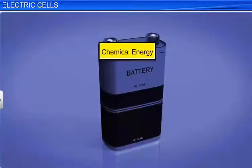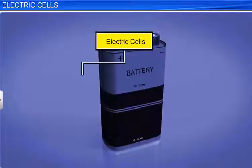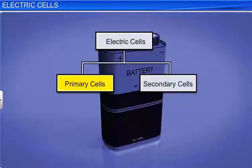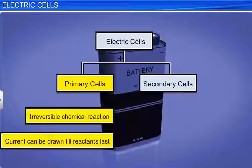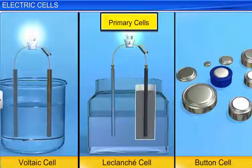There are two types of electric cells: primary cells and secondary cells. In primary cells, the chemical reaction is irreversible. Hence, current can be drawn from this type of cell until the reactants last. Once the reactants have been consumed, current cannot be drawn. The voltaic cell, Leclanche cell, Daniel cell, bichromate cell, dry cell, and button cell are some examples of primary cells.